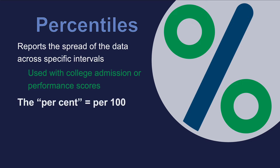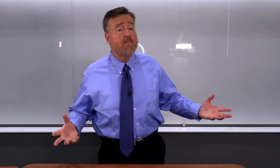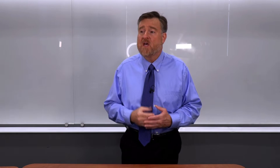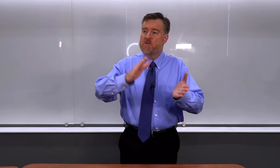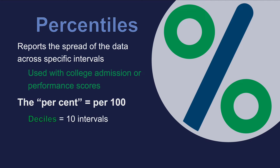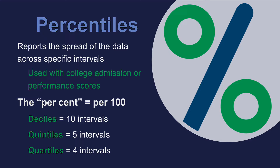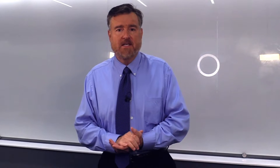In the word percentiles, we see the word per cent. Just like one cent is one one-hundredth of a dollar, per cent means per 100. However, we are not limited to 100 units. We could divide our distribution into 10 units, which we would call a decile, or five units, a quintile, or four units, which is a quartile — and quartiles is what we're going to discuss next.